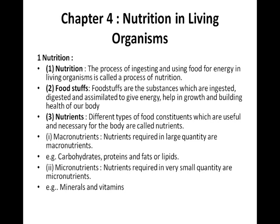The third topic is nutrients. What are nutrients? Different types of food constituents which are useful and necessary for the body are called nutrients. The nutrition present in food — for example, carbohydrates, vitamins, and minerals — are called nutrients. On the basis of this, nutrients have been further divided into two parts: macronutrients and micronutrients.